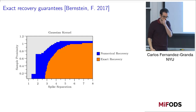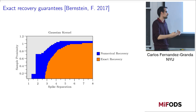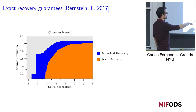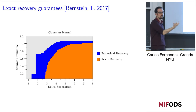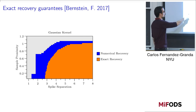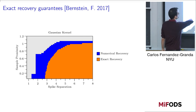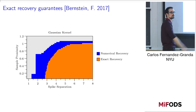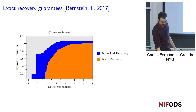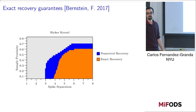Using this technique, we obtain quite a sharp characterization of the method's performance. Assuming a Gaussian with standard deviation 1, we observe exact recovery in a certain region and can prove recovery down to a specific region. We also prove analogous results for the Ricker kernel.